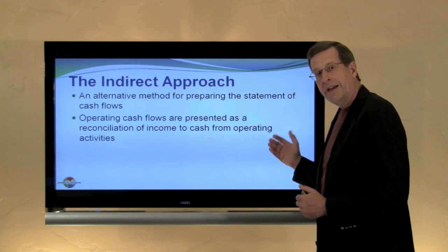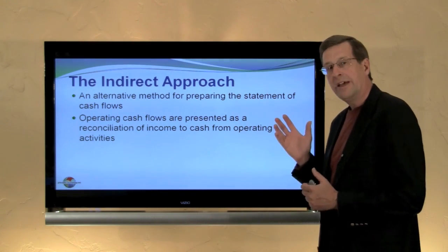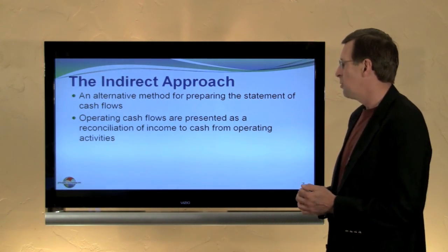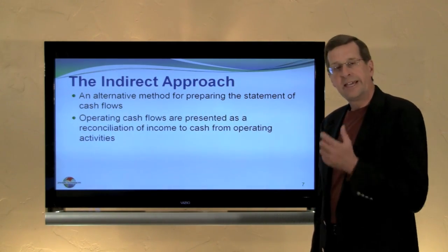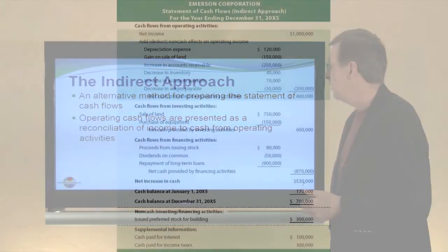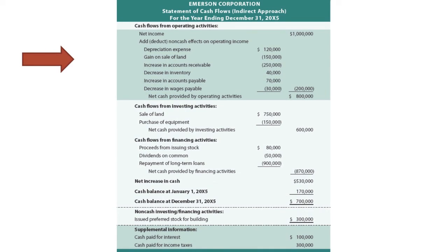When an indirect approach is used, the operating cash flows are presented as a reconciliation of income to cash from operating activities. Here's a Statement of Cash Flows. The first section is cash from operating activities — we have net income, plus and minus the various adjustments — this is what we saw in the earlier slide, the $800,000 net cash provided by operating activities. The cash flows from investing activities is identical to what it was with the direct approach from the previous module, as are the cash flows from financing activities.